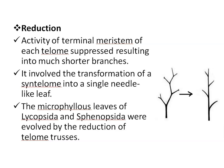The fourth process is reduction. The activity of the terminal meristem of each telome is suppressed, resulting in much shorter branches. This involves the transformation of a telome into a single needle-like leaf, as in conifers. According to Zimmerman, the microphyllous leaves of Lycopsida and Sphenopsida were evolved by reduction of telome trusses.